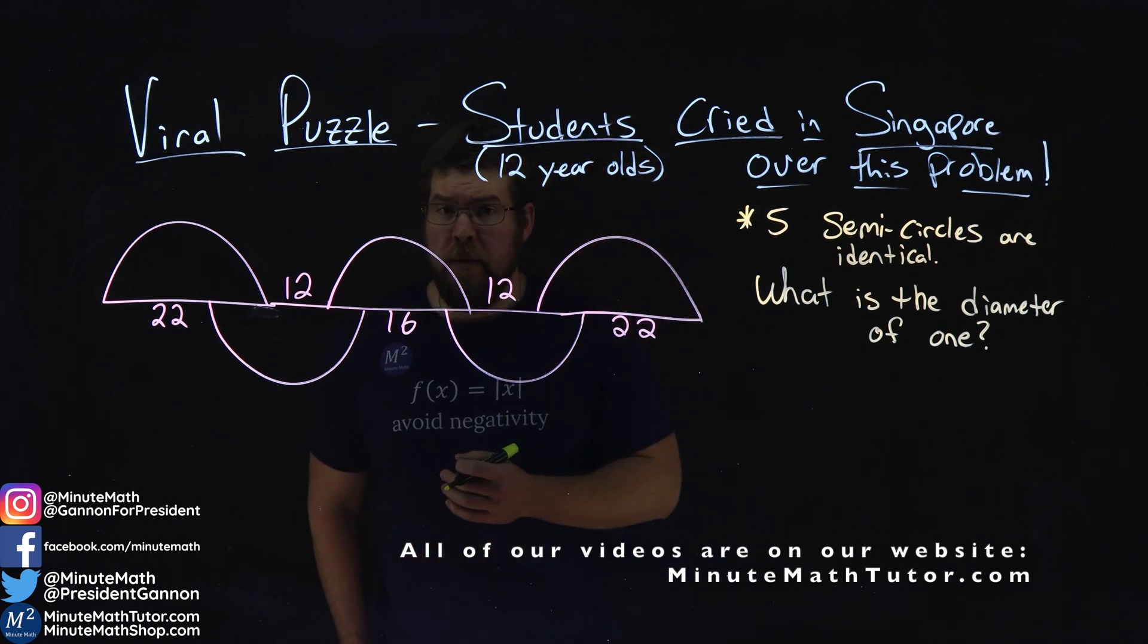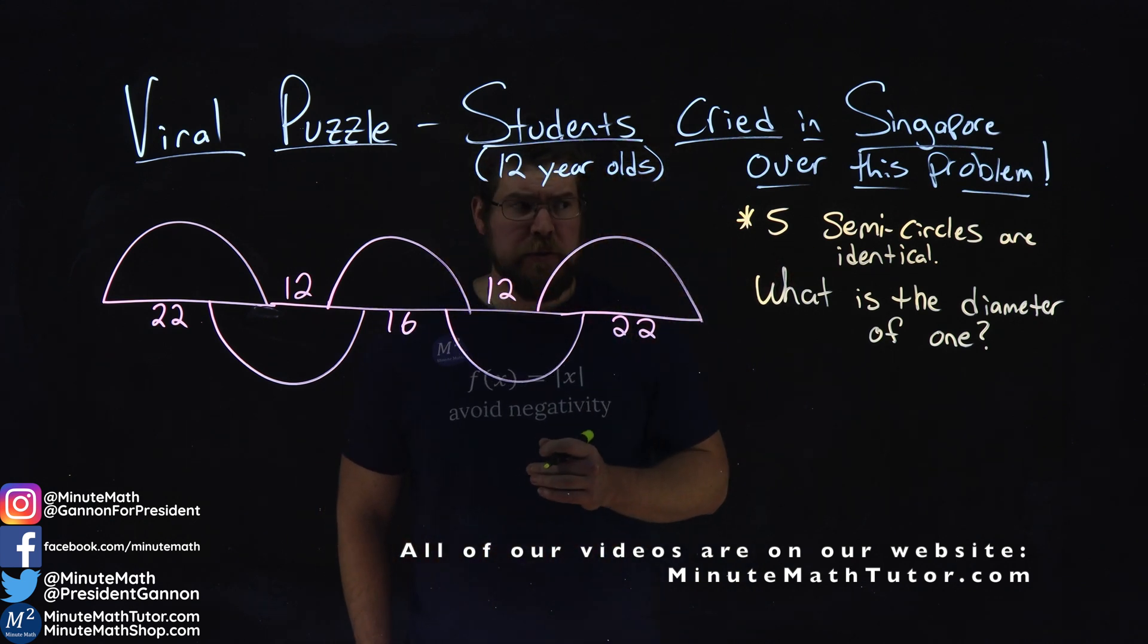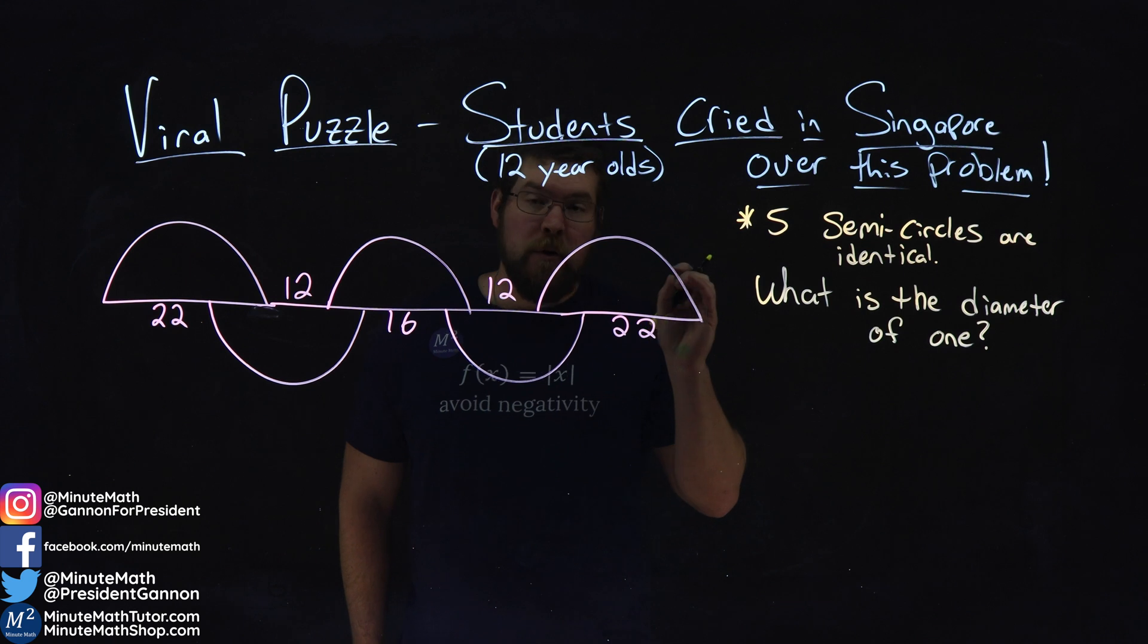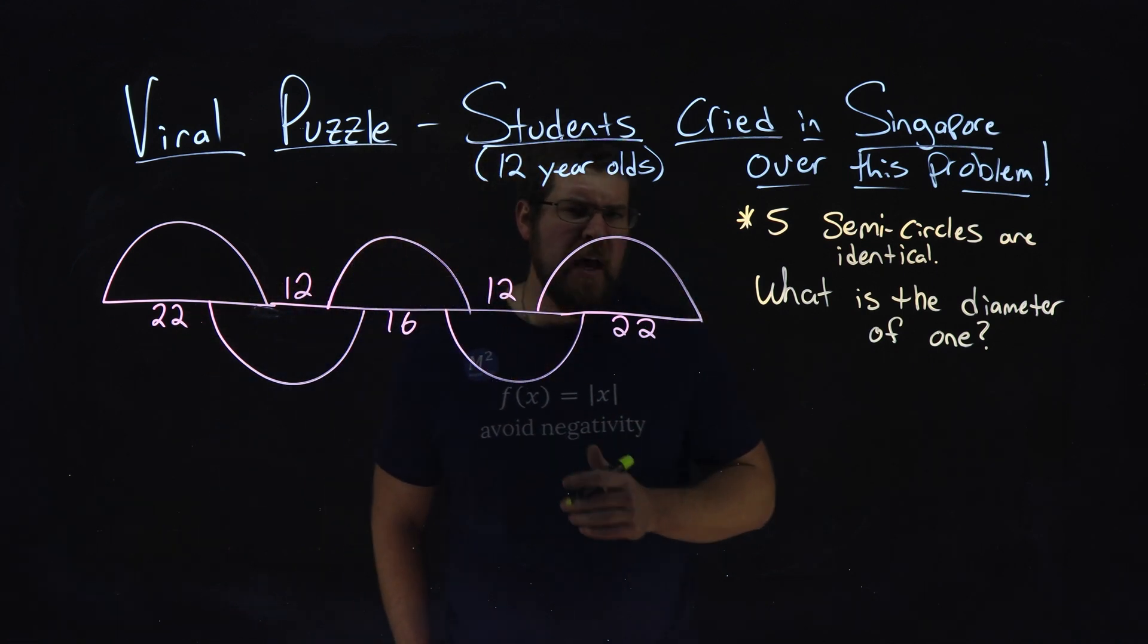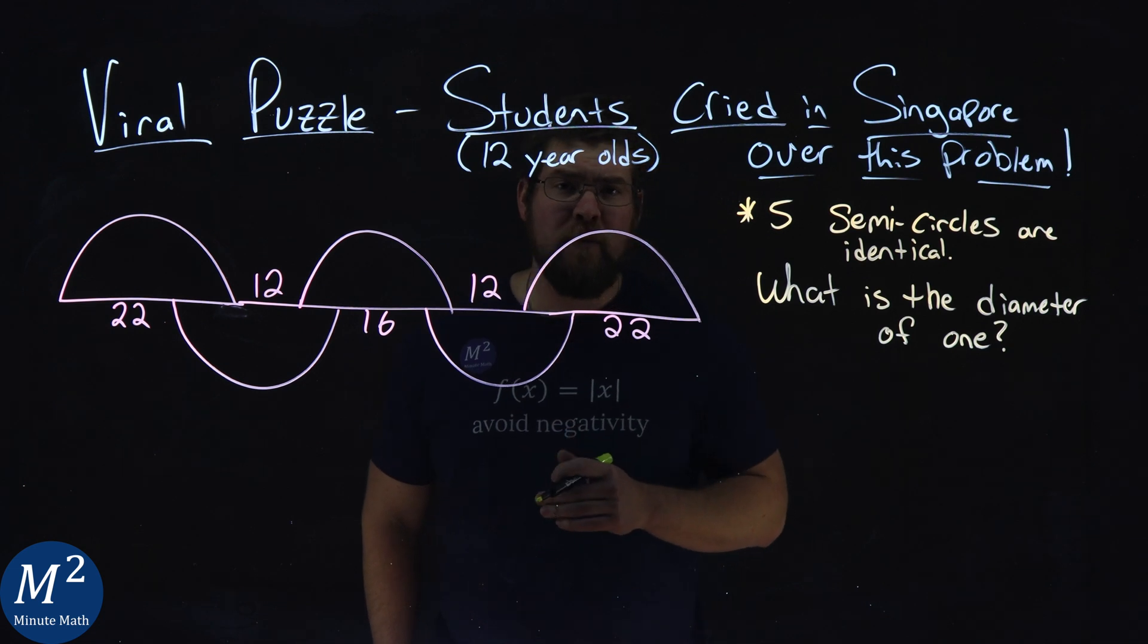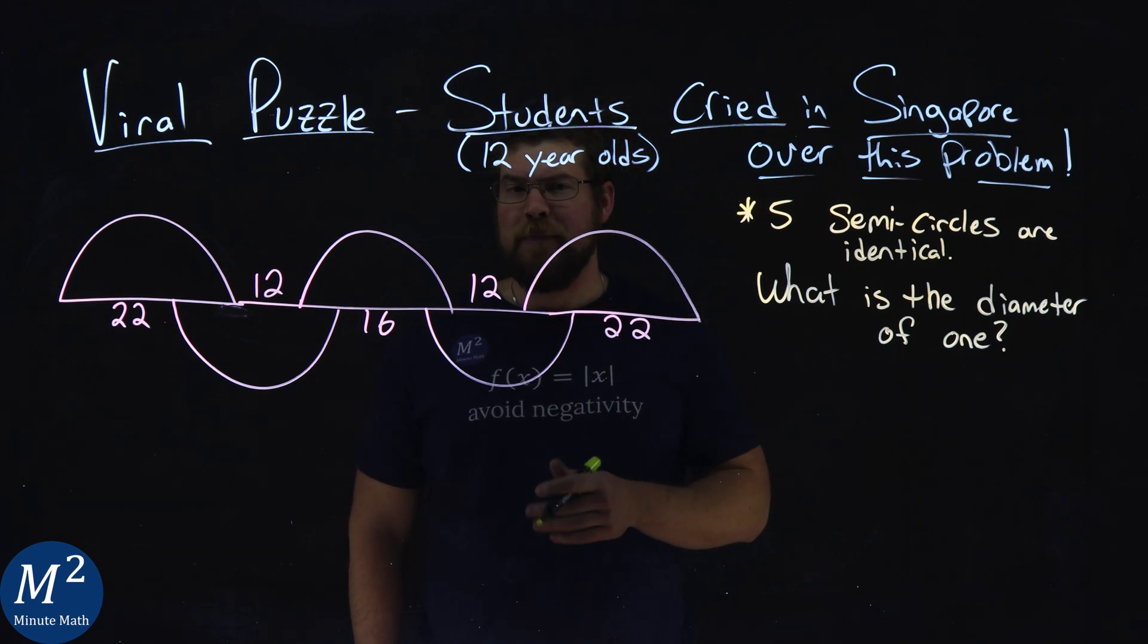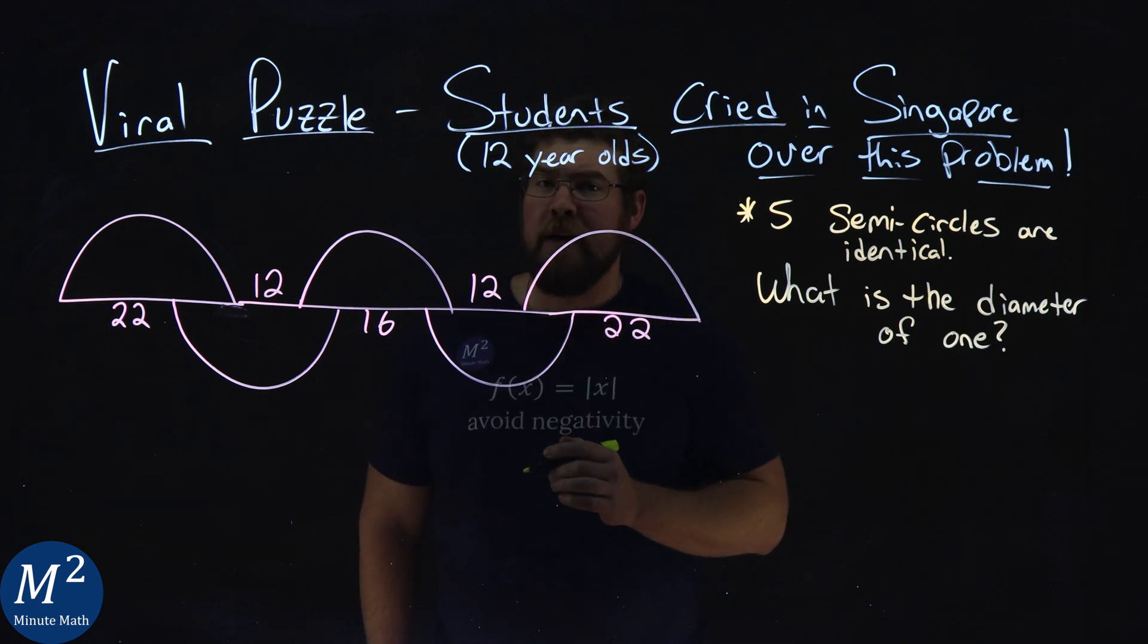The problem is this. We're given five semicircles that are identical, and we want to find the diameter of one, and they're giving us some values here and some lengths that are given. I want to see if you can solve this problem, or are you going to cry over it? So pause this video and see if you can solve it.